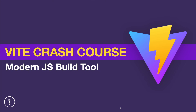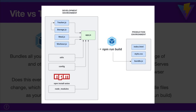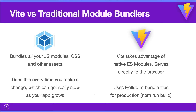Vite is a more modern build tool, but first it's important to understand how traditional module bundlers like webpack work. Webpack takes your development file structure — which could include many JavaScript files, classes, functions, imports, exports, npm modules, CSS, Sass, PostCSS — and bundles it all into sometimes a single JavaScript file like bundle.js or main.js, which is then included in a script tag in your HTML as your production build.